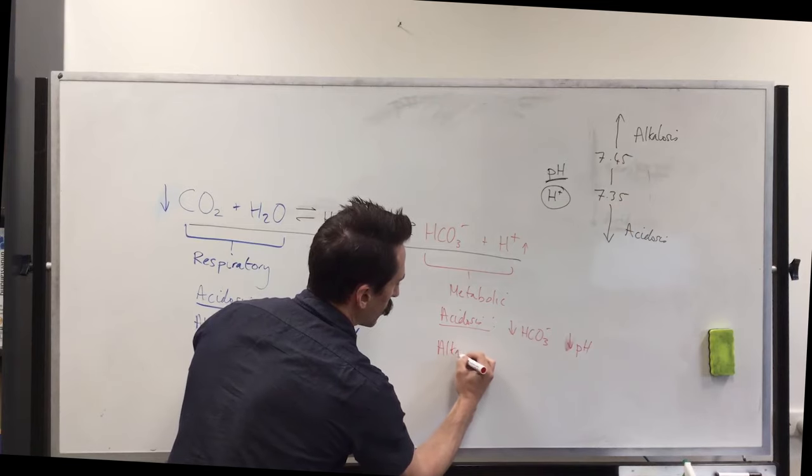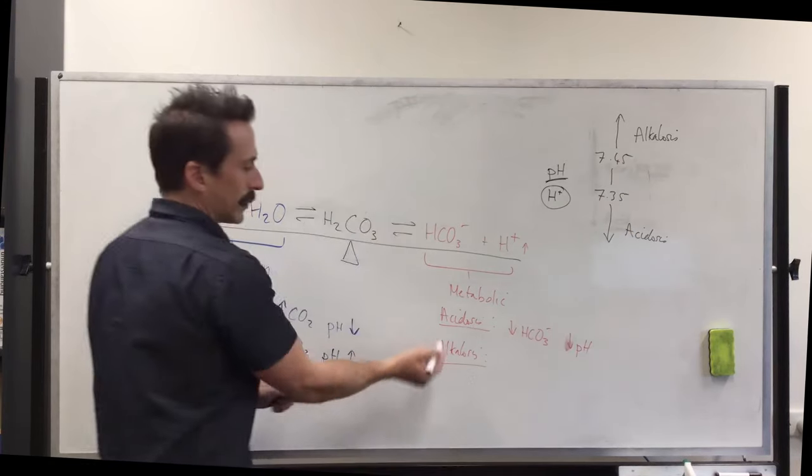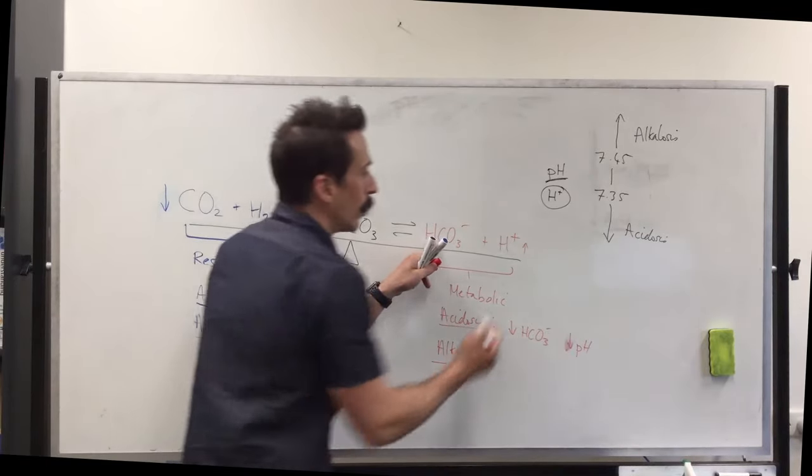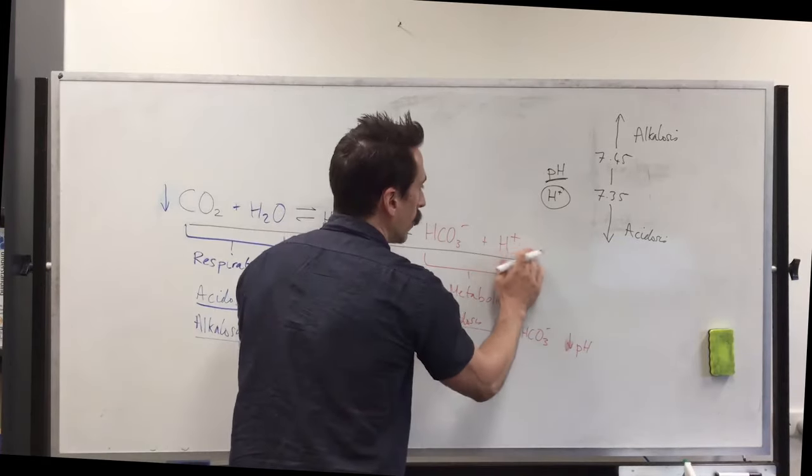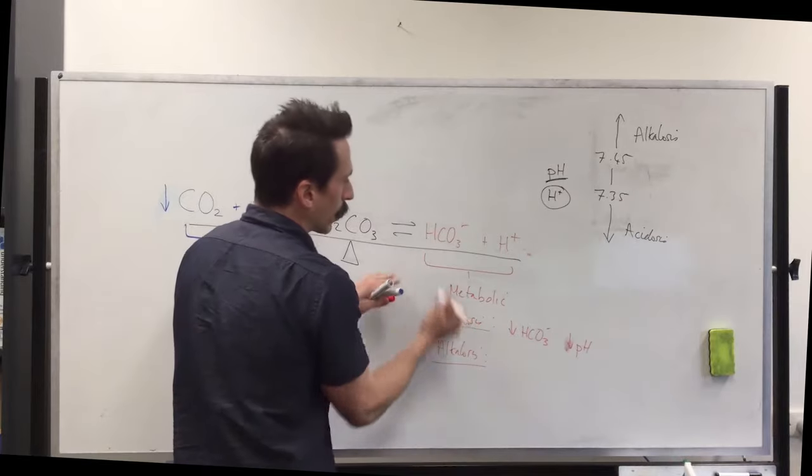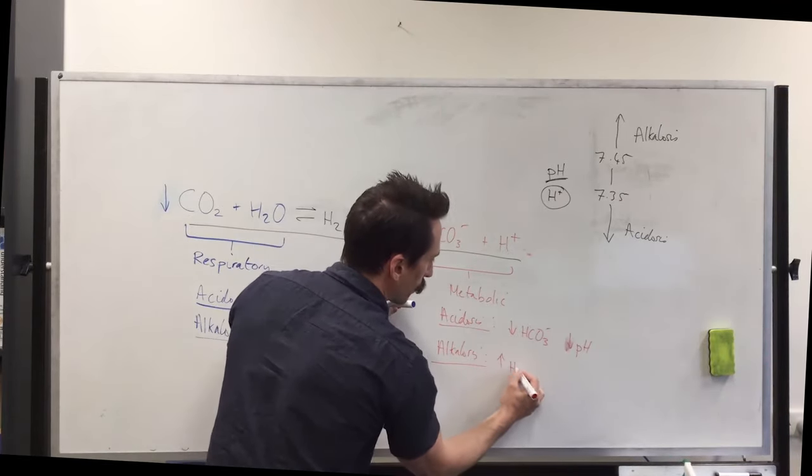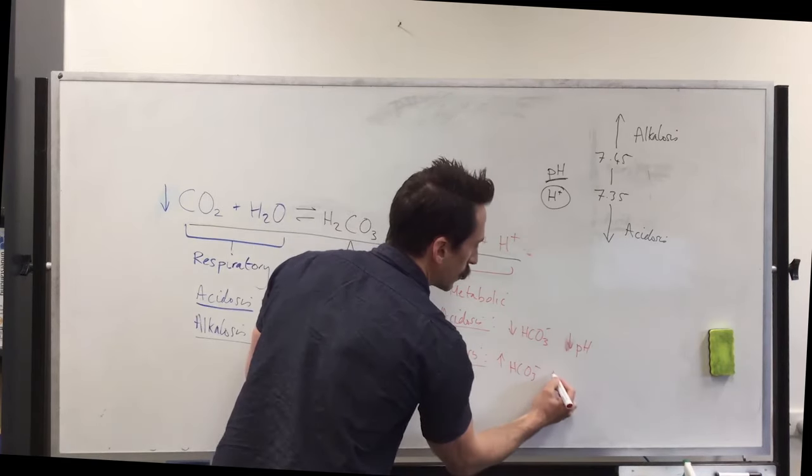In metabolic alkalosis, what's happening is it's producing too many bicarbonate ions or again, it could be the fact there's not enough hydrogen ions, maybe one or the other. But what we do know is that in alkalosis, there's more bicarbonate ions if it's uncompensated. And what happens is the pH goes up as well.